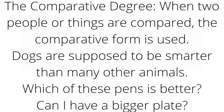Second point is the comparative degree. जब दो लोग या चीजों को compare किया जाता है, तब comparative degree use की जाती है. For example: taller, shorter, bolder.